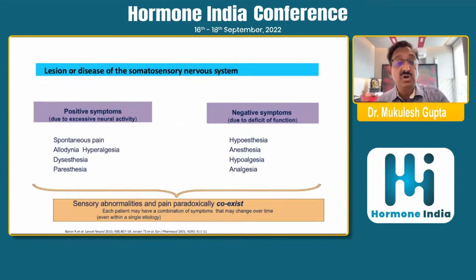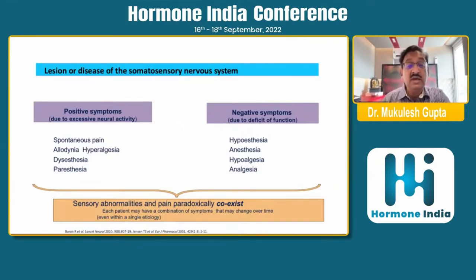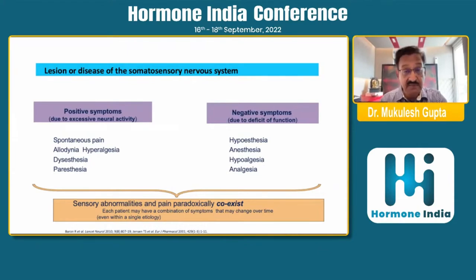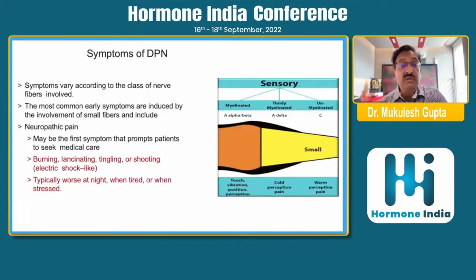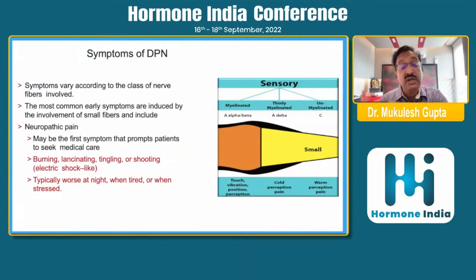The symptomatology includes positive symptoms or negative symptoms — spontaneous pain, allodynia, hyperalgesia, dysesthesia, paresthesia — and negative symptoms in the form of hypoesthesia, anesthesia, and analgesia. How the patient comes to us depends upon the class of nerve fibers involved; peripheral small fibers are more commonly involved. Common symptoms with which the patient first presents are burning, lancinating, tingling, and shooting electric shock-like pain, typically worse at night or when the person is tired or stressed.